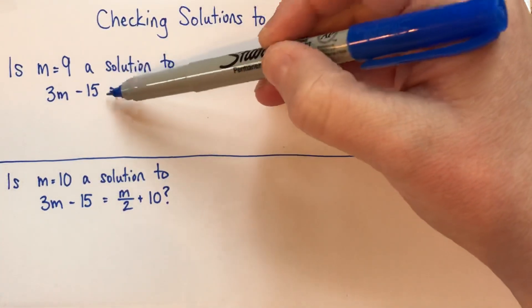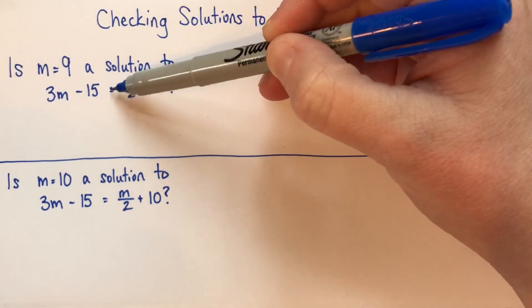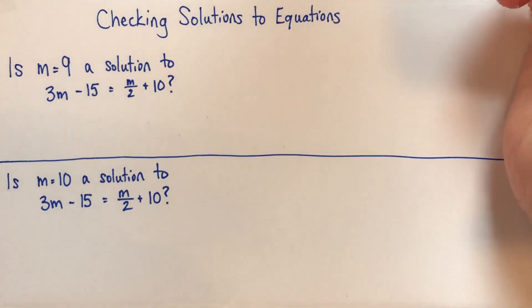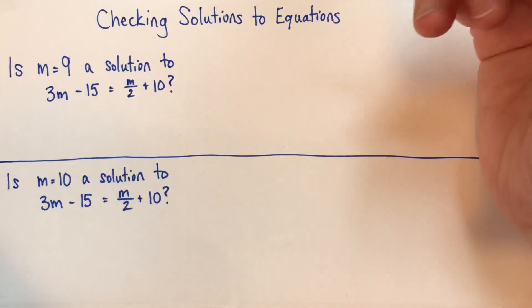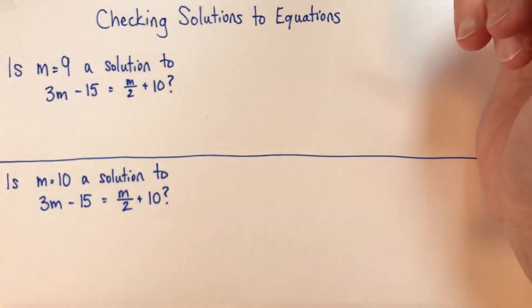And this is really important. We need to just quickly review what the equal sign means, or what equal means. Equals means that things are the same. So they have the same value. They're both worth the same amount.